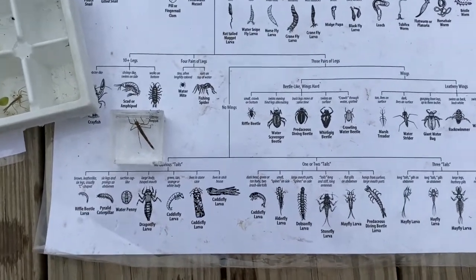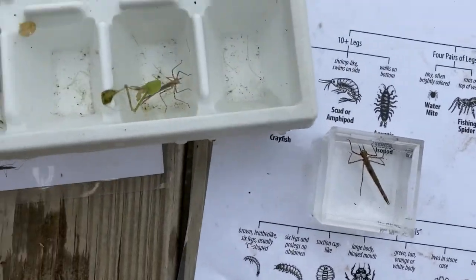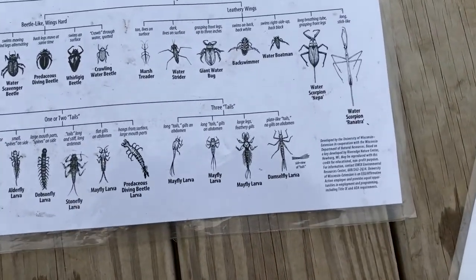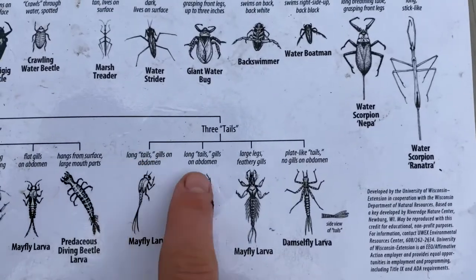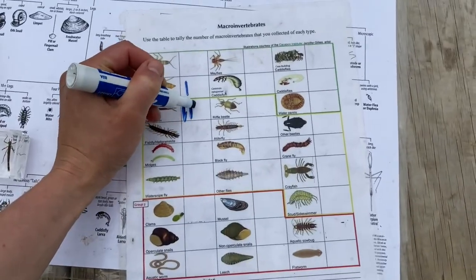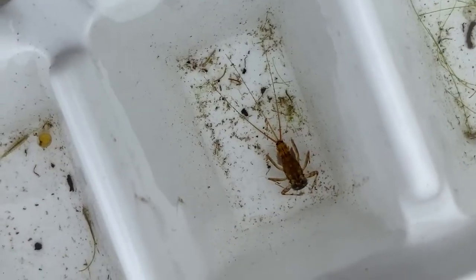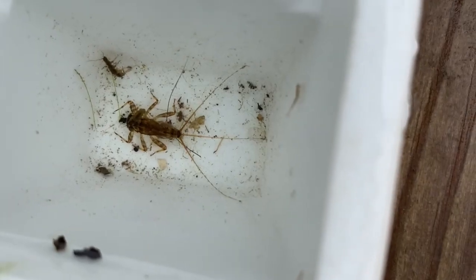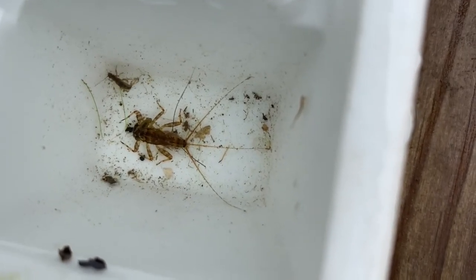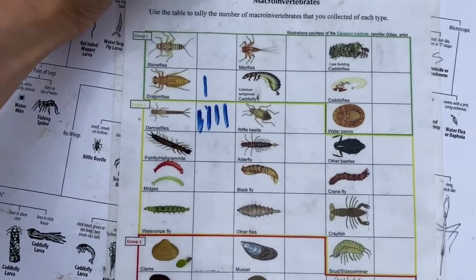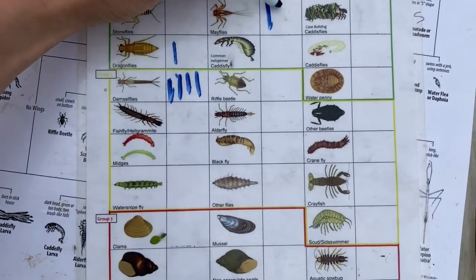Continuing to use the key, I determined that these guys are damselflies — they had three tails. And these guys are mayflies — just different kinds. A really cool adaptation: they have gills that they flutter in the water to bring in oxygen. You can actually see the gills fluttering right now. Mayflies are also sensitive to pollution.